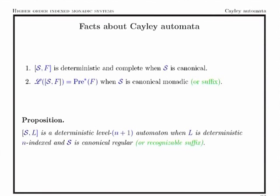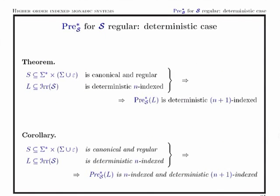The language accepted by the Cayley automaton is precisely the pre-image of the set of final states when the system is canonical and monadic. We can establish that the Cayley automaton is a deterministic level-(n+1) automaton when the set of final states is a deterministic n-indexed language and the system is canonical and regular. This leads to the main result: when we have a canonical and regular string writing system and a deterministic n-indexed language, the pre-image is a deterministic level-(n+1) indexed language. Combining with the non-deterministic result: starting from a deterministic n-indexed language and using a canonical and regular system, the pre-image is n-indexed, but to be deterministic it requires going one level higher in the hierarchy.